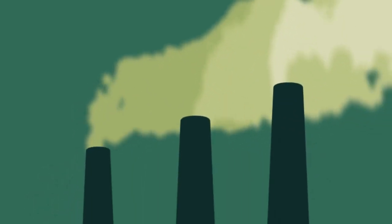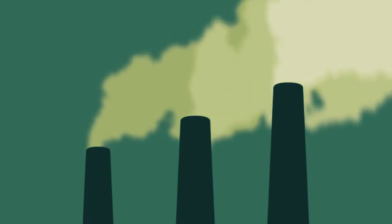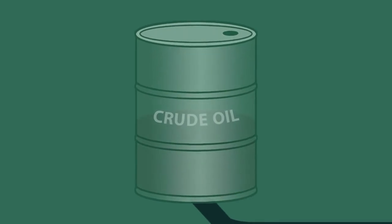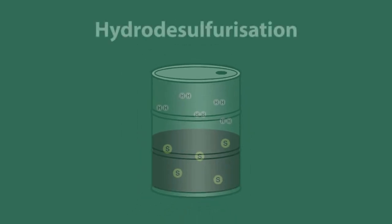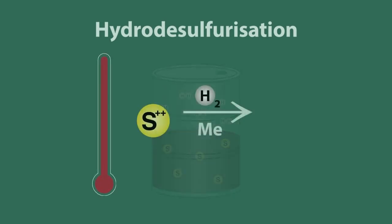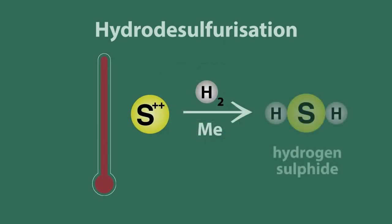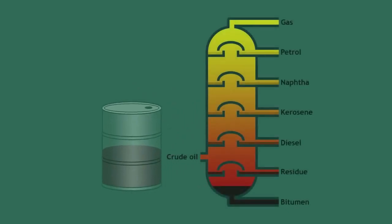However, scrubbing does reduce the efficiency of the power station, maybe by as much as 10%, thus increasing the cost of electricity. In oil refineries, sulfur is removed from crude oil by reacting it with hydrogen. This reaction, known in industry as hydro-desulfurization, takes place at high temperature with a metal catalyst to produce hydrogen sulfide — that bad egg smell and a very poisonous gas. When this purified oil is refined into various fuels, it is virtually free of sulfur.